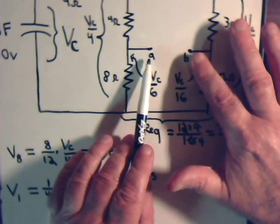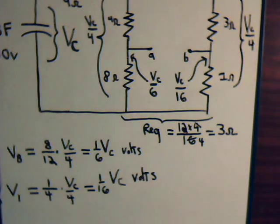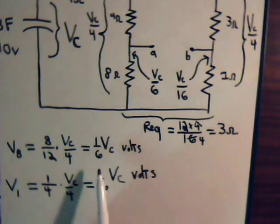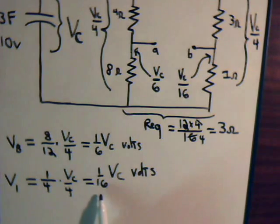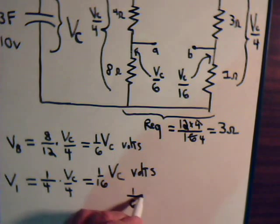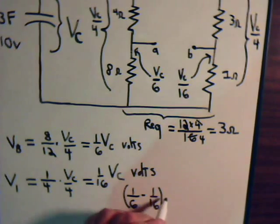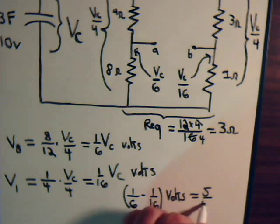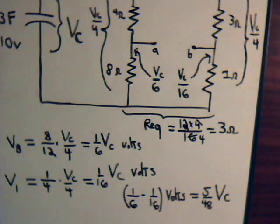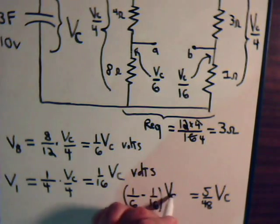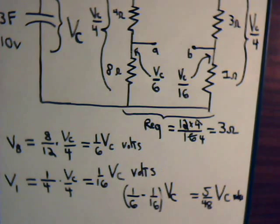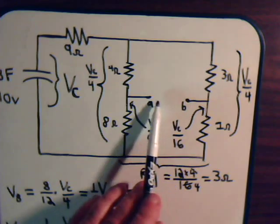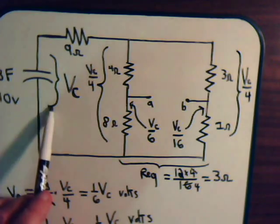Now we want to know the voltage difference across the gap — points A and B. All we have to do is take the difference between the two voltages: 1/6 minus 1/16. That comes out to 5 over 48 times Vc. So the voltage across A and B at any time is 5/48 times Vc.